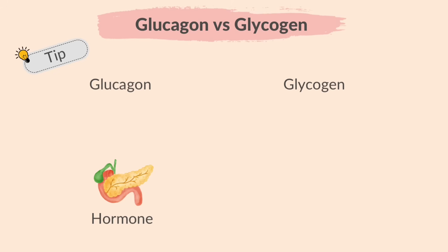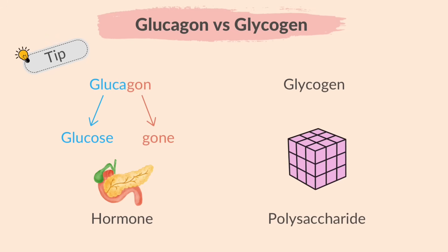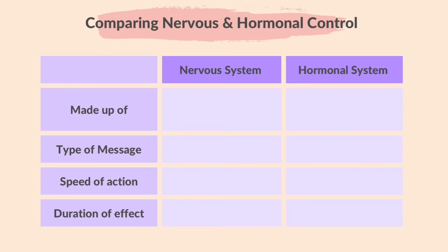It is very common to get confused between the words glucagon and glycogen. An easy way to remember the hormone glucagon is that it's the hormone released when the glucose is gone. Glycogen, on the other hand, is the stored form of glucose, made up of many connected glucose molecules — not to be confused with the hormone glucagon.